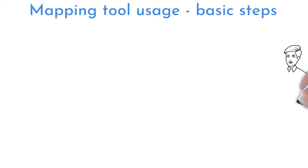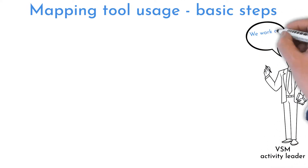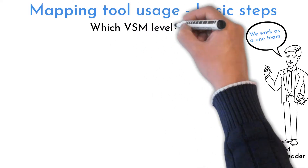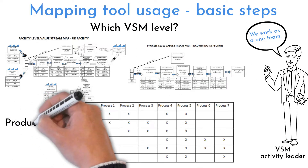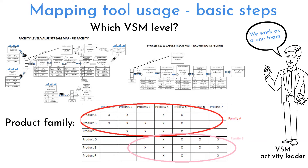Make sure there is just one person leading, but mapping should be a team effort. You must know which level of the map you want to draw first. To start mapping, you need to choose a product family — by doing this, you identify products going through similar process steps, which helps the team focus on products that customers really want.